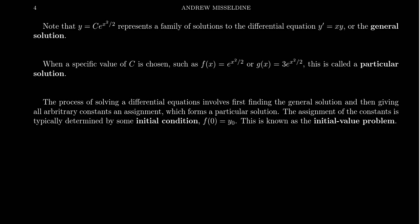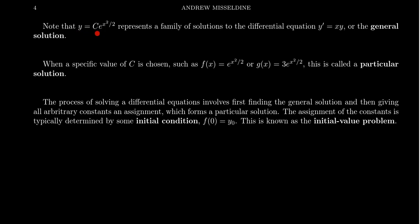In the previous video, we showed that the function y equals c times e to the x squared over 2 is in fact a solution to the differential equation y prime equals xy. And we can do this for any parameter c whatsoever. This represents what we call the general solution of our differential equation.